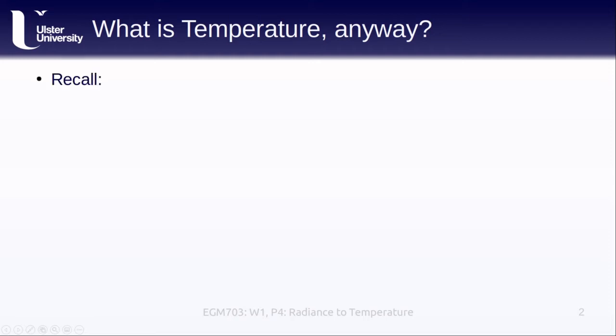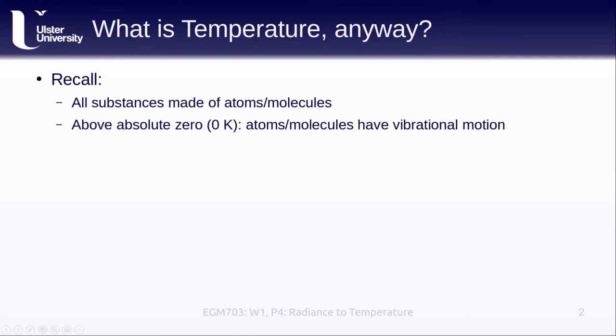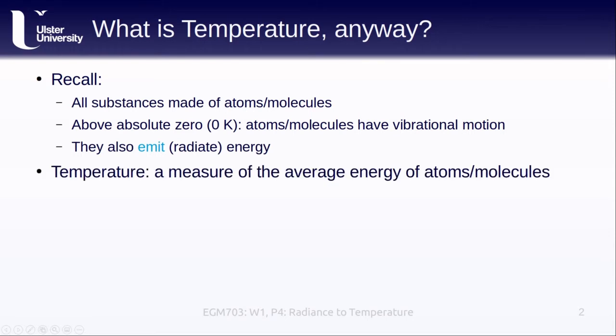From previous lessons remember that all substances are made up of atoms or molecules. When we're above absolute zero or zero Kelvin, these atoms or molecules have some kind of vibrational motion and as a result of that motion they also emit or radiate energy. Temperature is a measure of the average energy contained in those atoms or molecules. If an object has a high temperature, it contains more energy, usually in the form of heat.